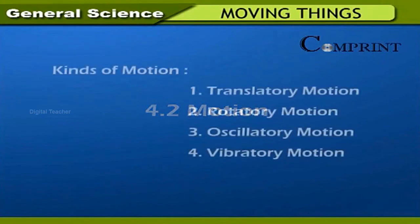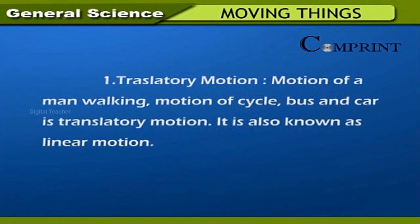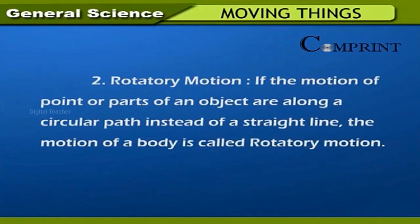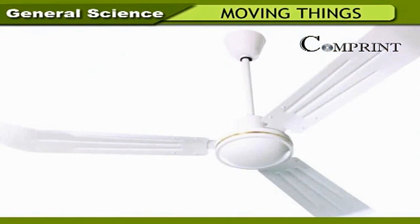Motion — kinds of motion: 1. Translatory motion, 2. Rotatory motion, 3. Oscillatory motion, 4. Vibratory motion. The motion of a man walking, cycle, bus, and car is translatory motion, also known as linear motion. Rotatory motion: if the motion of a point or parts of an object is along a circular path instead of a straight line, the motion is called rotatory motion. Movement of a merry-go-round, wings of a fan, and hands of a clock belong to this kind of motion.